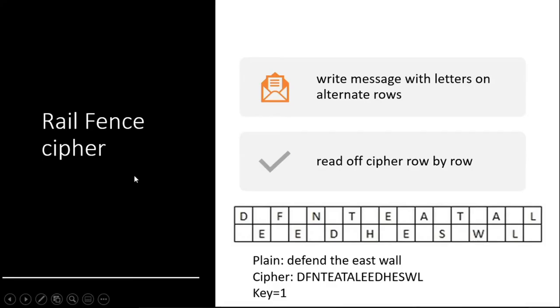Next comes Rail Fence cipher. All of you have seen the rail fence, right? So what it says is that you write the text in rail fence-like lines. Say if you have plaintext like 'defend the east wall', you write like this: D, E, F, E, N, D in a zigzag way, and you just read them line by line.